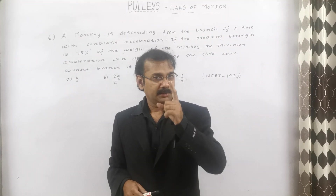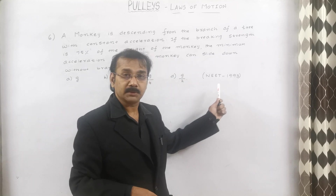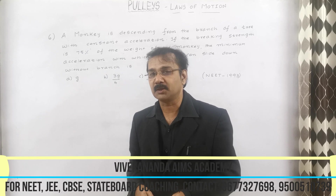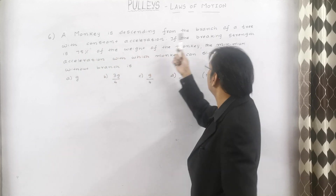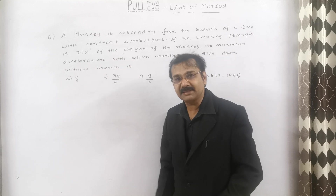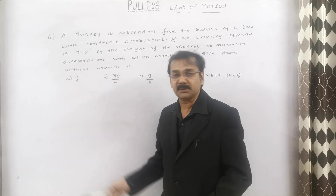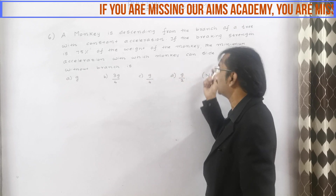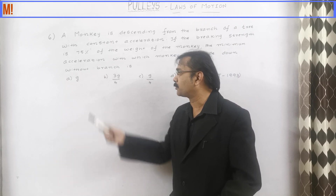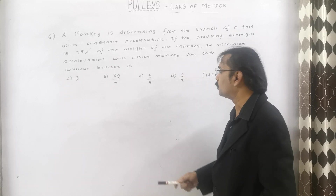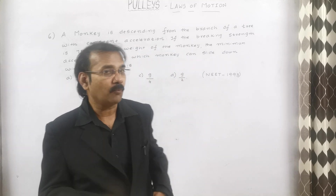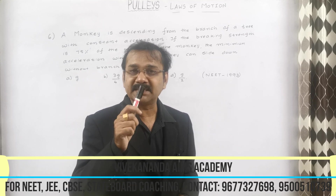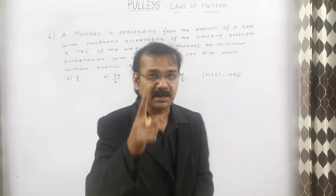Let us go for the 6th question. This question was asked in the year 1993. In the topic of pulleys, chapter of Laws of Motion: a monkey is descending from the branch of a tree with constant acceleration, yet the rope tension is 75 percent of the weight of the monkey. The minimum acceleration with which the monkey can slide is asked. Options: option A G, option B 3G by 4, option C G by 4, and option D G by 2. We are not going to use any formula — in a single step and within a fraction of seconds, by seeing the sum itself, we can get the answer immediately.